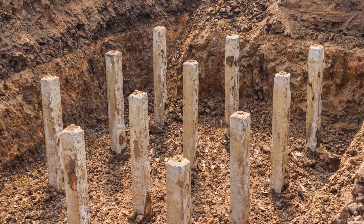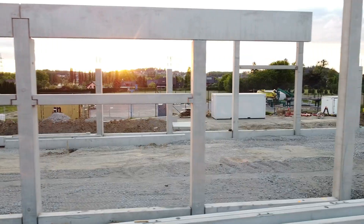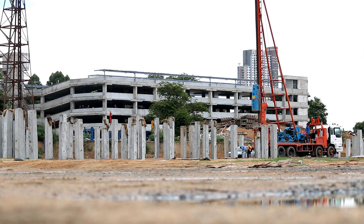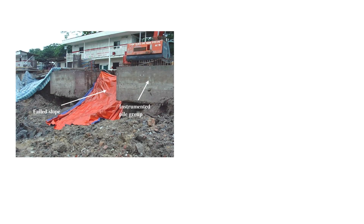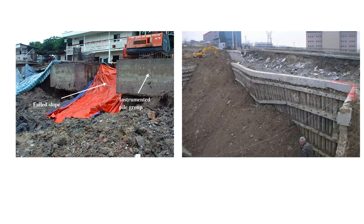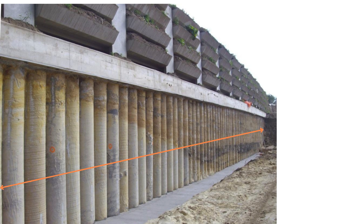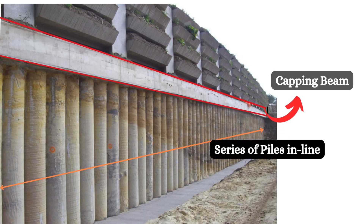On many construction sites, especially those involving deep foundations and basement levels, piles are driven deep into the ground to carry the load of the upcoming structure. These piles, though strong individually, need to work as a system. Without being tied together, they are vulnerable to shifting, especially when excavation starts or lateral soil pressures act on them. To ensure stability and to safely transfer structural loads from the superstructure to the piles, a structural element is constructed across the top of the piles. This is known as a capping beam.